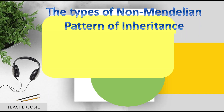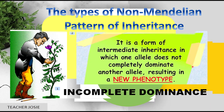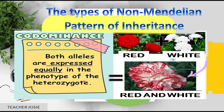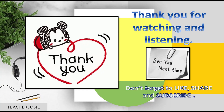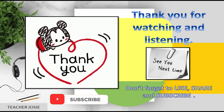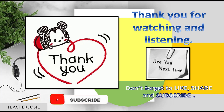To sum up, the three types of non-Mendelian patterns of inheritance are: incomplete dominance — a form of intermediate inheritance in which one allele does not completely dominate another, resulting in a new phenotype; codominance — both alleles are expressed equally in the phenotype of the heterozygote; and multiple alleles — a single gene that has more than two alleles. Thank you for watching and listening. Don't forget to like, share, and subscribe. See you next time, bye!